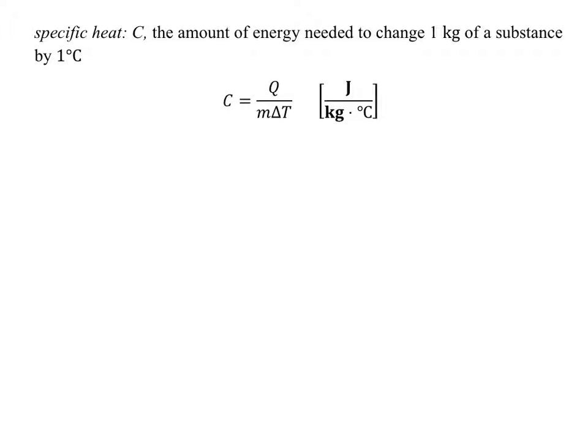Let's start with our definition of specific heat capacity. The definition is what leads us to this formula. It's the amount of energy needed — that's Q — to change one kilogram of a substance, that's the mass, by one degree Celsius, that's the change in temperature. If I have copper, a copper pipe, and I want to heat it up, Q is the amount of energy needed to heat it up by one degree Celsius if that copper pipe is one kilogram in mass.